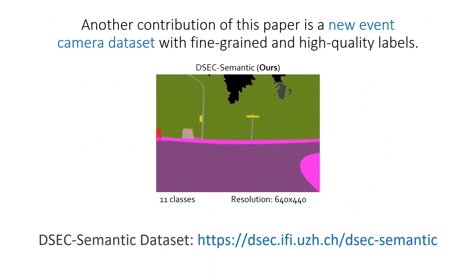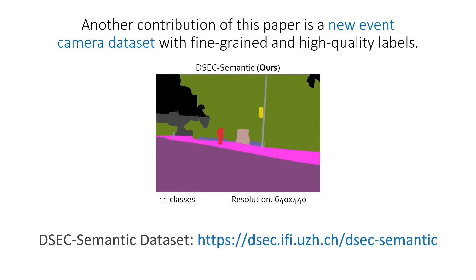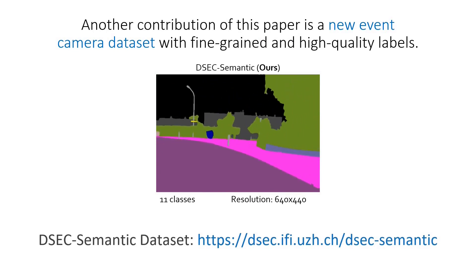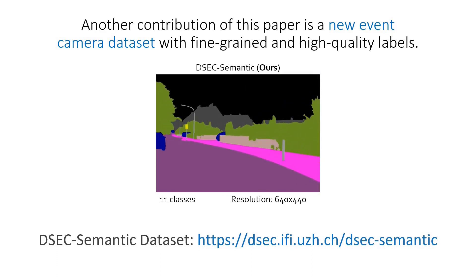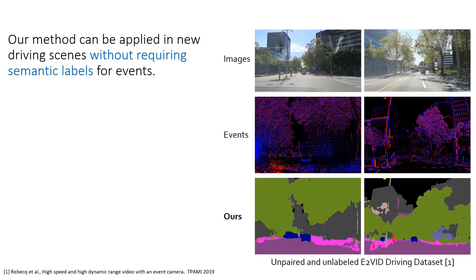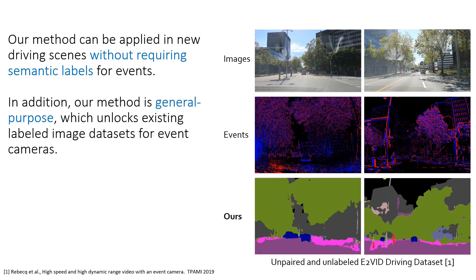Another contribution of this paper is a new event camera dataset with fine-grained and high-quality semantic segmentation labels. In conclusion, our method can be applied in new driving scenes without requiring semantic labels for events. Additionally, our method is general purpose, unlocking existing labeled image datasets for training neural networks for event cameras.